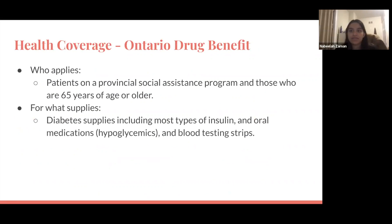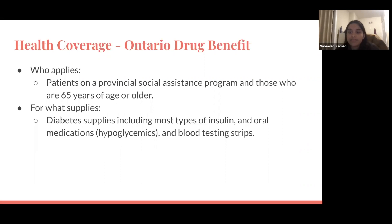For coverage providers, the Ministry of Health and Long-Term Care offers coverage through the Ontario Drug Benefit (ODB) plan. Patients who qualify include those on a provincial social assistance program and those who are 65 years of age or older. Covered supplies typically include most types of insulin, oral diabetes medications, and blood testing strips. If you are 65 or older using the ODB with an annual income of $16,000 or more, you'll pay an annual deductible of $100 upfront, then around $6.11 per prescription. If your annual income is less than $16,000, there is no upfront payment and you'll pay a $2 prescription fee. Consult your pharmacist or local services agency for more information on qualifying.